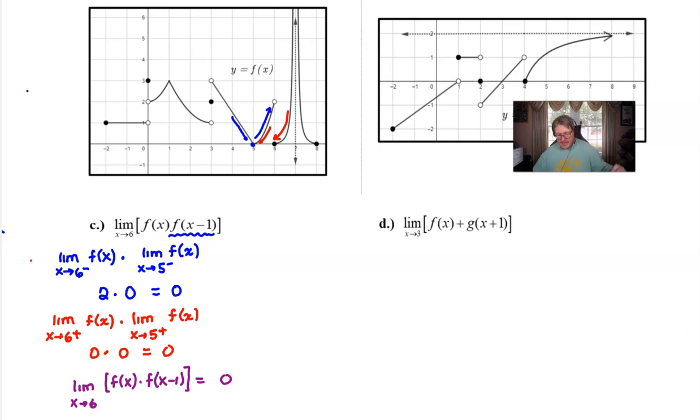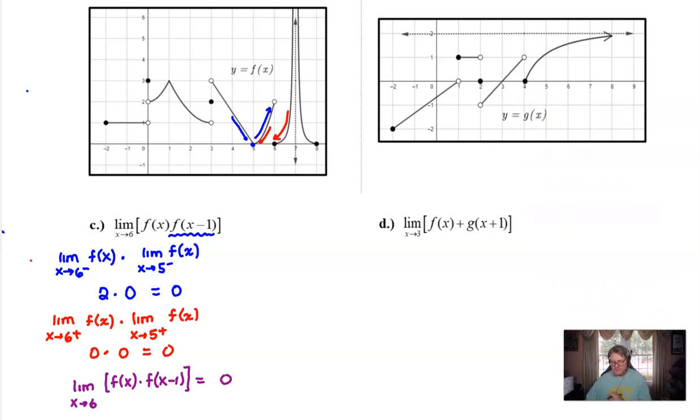Let's head back to our problem and take a look at part d. Part d is an addition problem with another translation, but we're not going to really tackle it any differently. So we're going to just assume that we can find the limit head-on approaching three from both sides. Again, not a big fan of altering the graph of g of x, so instead of shifting the graph to the left one, I will shift the target to the right one.